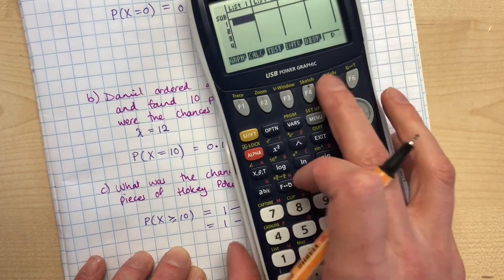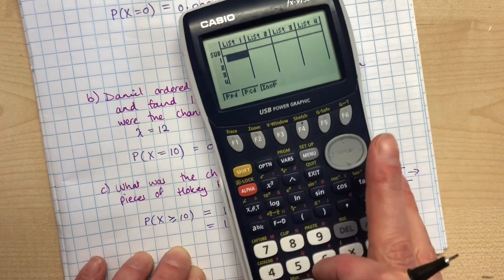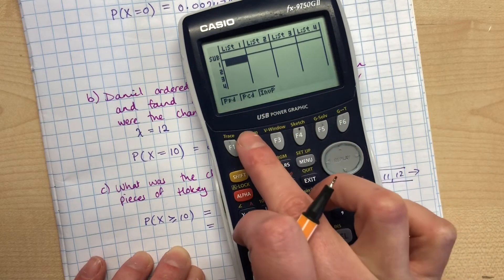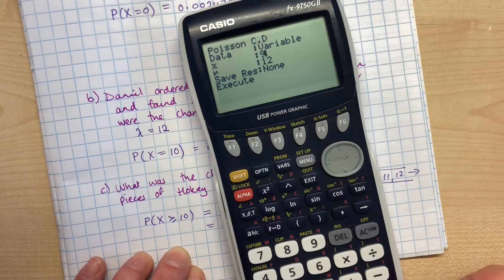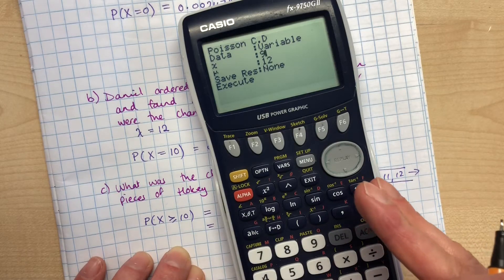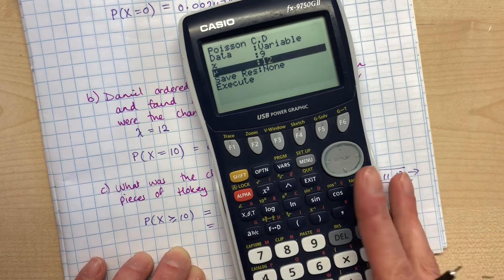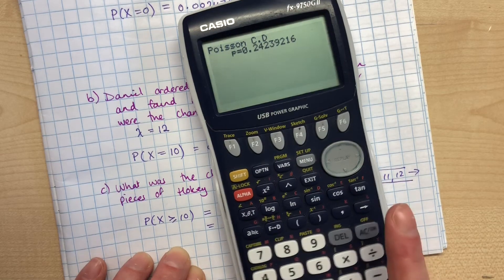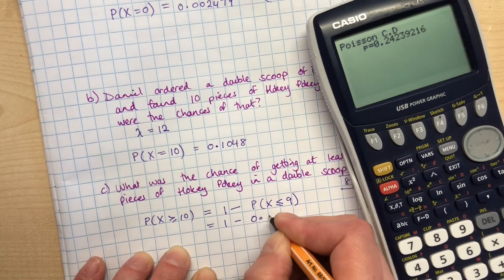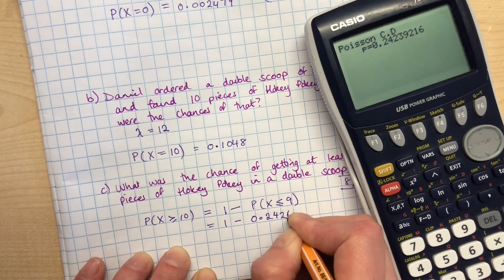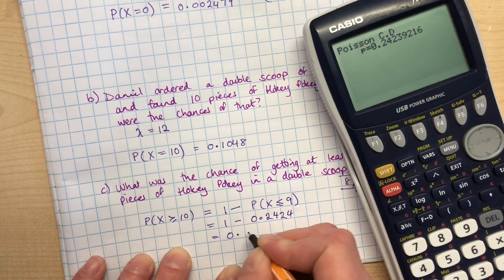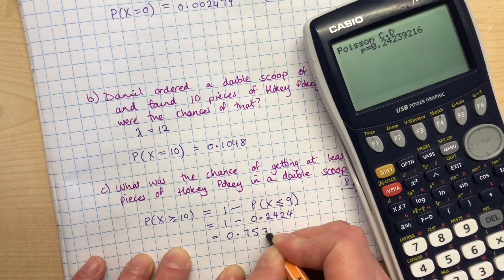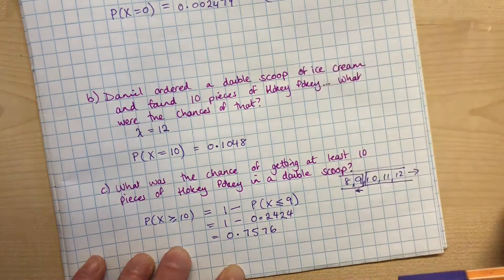So that's how you can think about this. This will be 1 minus. Now we need to go into a slightly different place, so we'll go distributions, Poisson, but now we're doing cumulative up to a point. So now we're doing a cumulative frequency up to and including 9. Your calculator includes the x value that you put in there - that's why we need to do the 9. Our lambda is staying at 12 as being a double scoop, and so now we get that probability up to and including 9 is 0.2424, and if we take that away from 1, we get 0.7576. All right, now just pushing it one little step further.